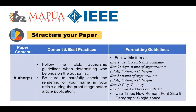The next important component is the authors. IEEE considers individuals who meet all the following criteria to be authors. Number one: you made a significant intellectual contribution to the theoretical development, system or experimental design, prototype development, or analysis and interpretation of data associated with the work. Number two: you contributed to the drafting, reviewing, or revising of the article for intellectual content. Number three: you approved the final version of the article as accepted for publication, including references. This approval is necessary especially when there are multiple authors.